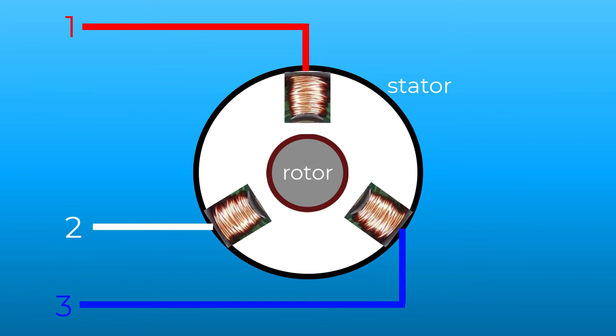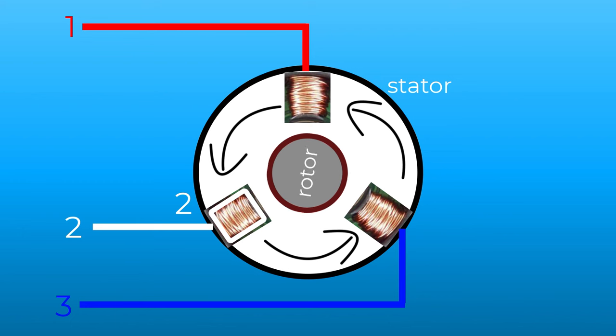When we swap two wires, the waveform pattern will stay the same, but the rotating magnetic field produced in the stator will now turn in the opposite direction, dragging the rotor along with it.